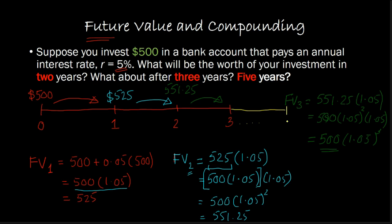Going to an arbitrary number T years into the future — where T could be 4, 5, 8, 10, 20, or 100 — the general rule is: to find the future value T years from now, take whatever amount you have today (the present value) and multiply it by (1 + R) raised to the power T, where R is the rate of return or interest rate. That is the general principle for finding future value T years into the future.